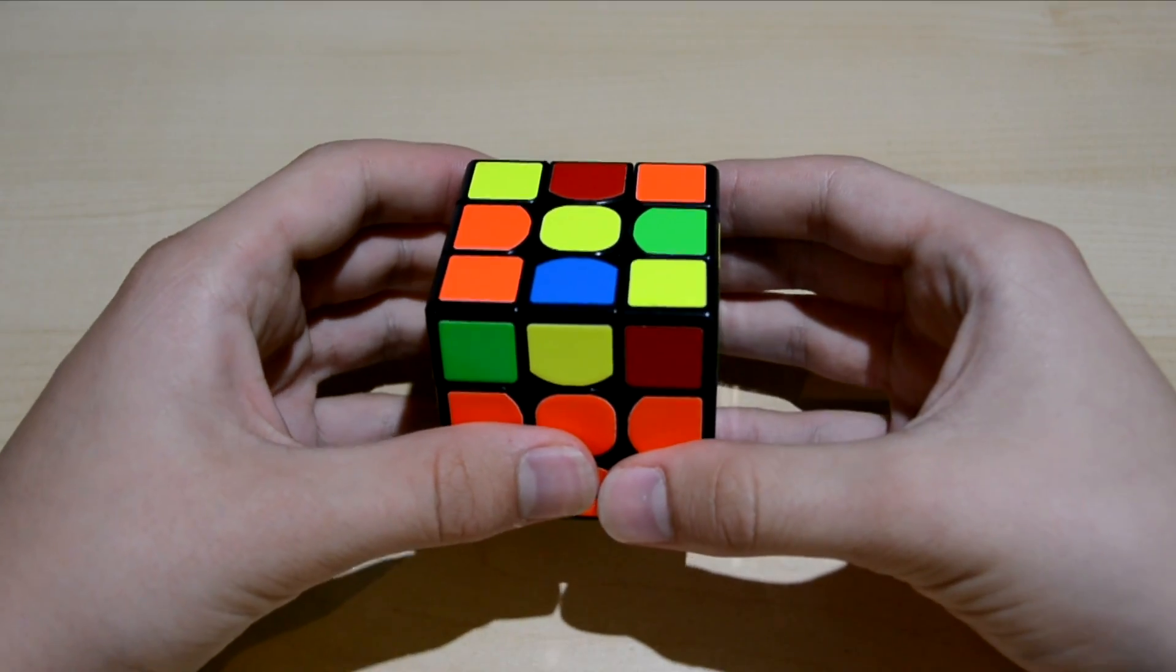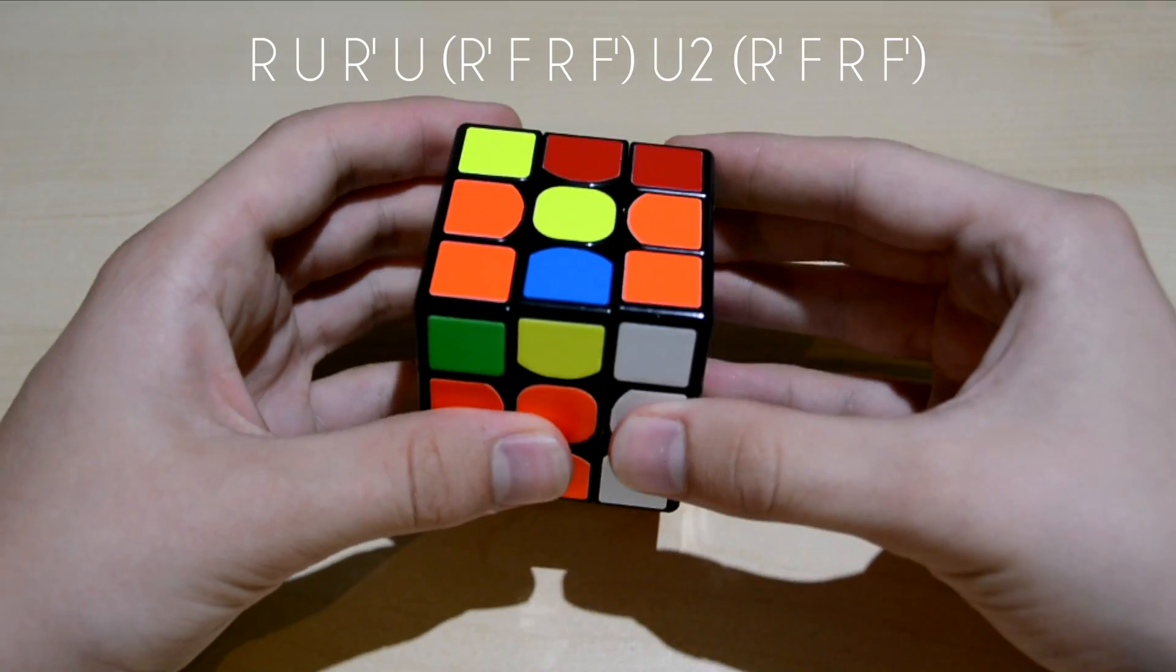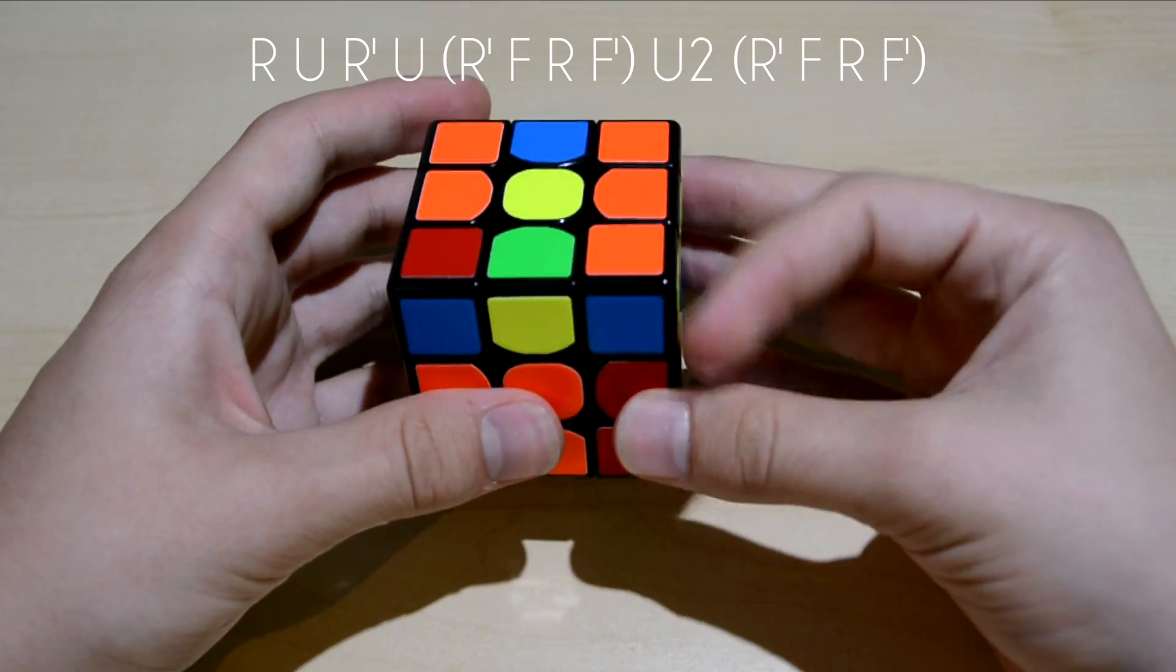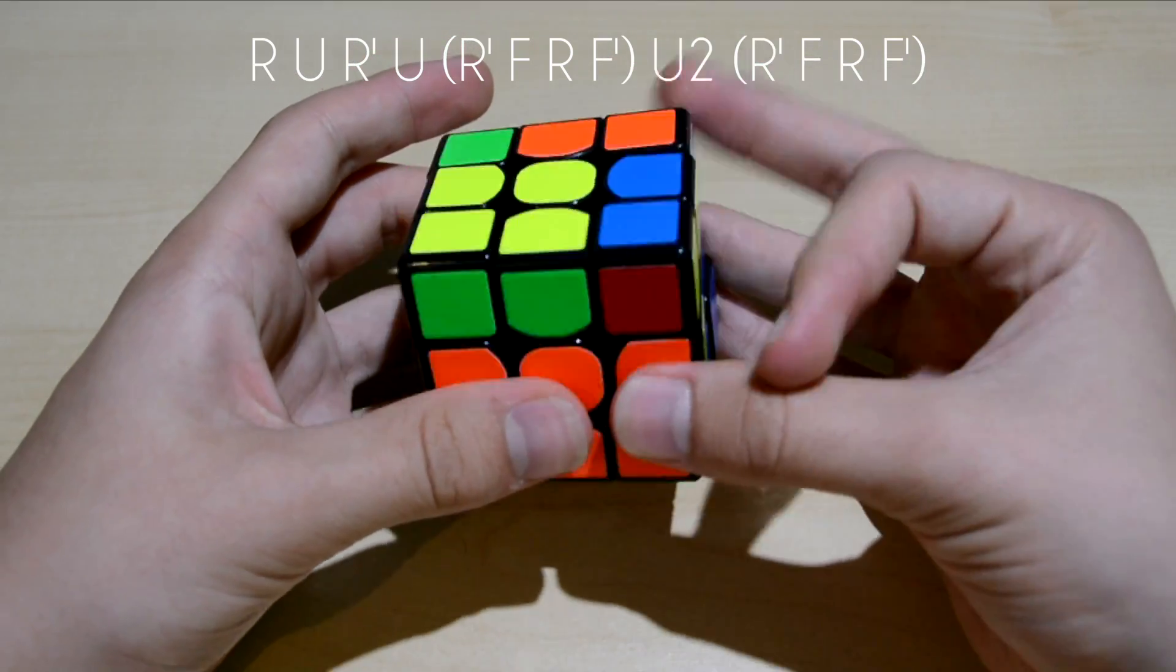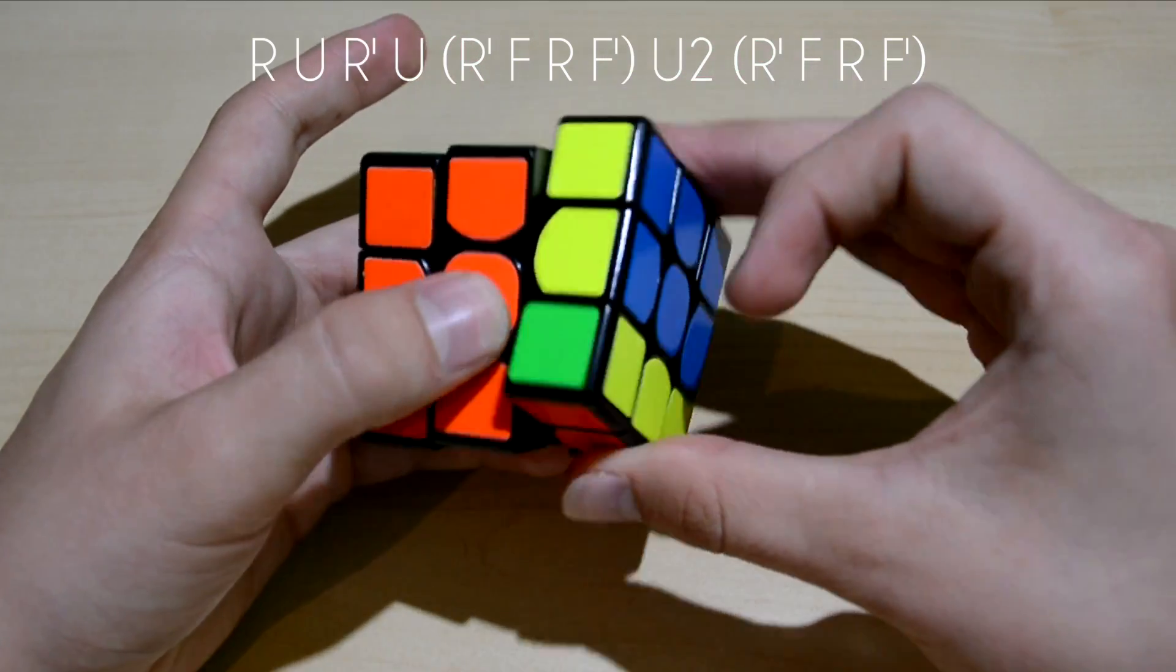The first algorithm goes like this: R U R', U R', F R F', U2 R', F R F'.